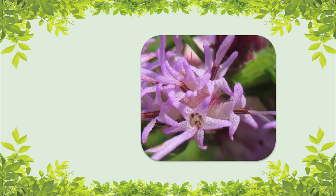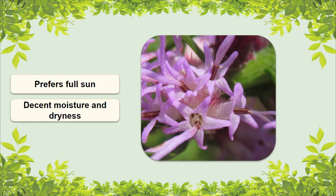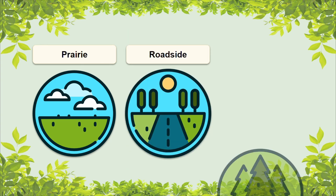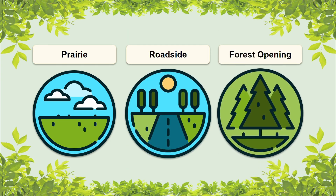When it comes to gay feather's natural environment, it prefers areas that are sunny and it can withstand decent moisture and dryness. However, if there is severe drought, it may not be able to survive. Some habitats gay feather can be found in include prairies, roadsides, and forest openings.